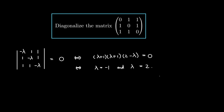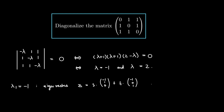We also calculated eigenvectors. Corresponding to lambda₁ equal to negative 1, the eigenvectors are all 3-vectors of the form s*(-1, 1, 0) + t*(-1, 0, 1). The eigenvectors here are given by two free variables, which will slightly enrich our problem. These are our eigenvectors corresponding to lambda₁ equal to negative 1.